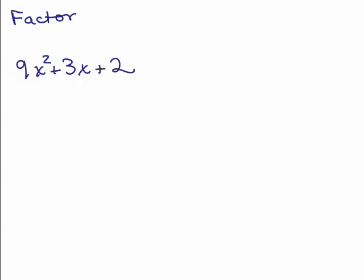Let's try this one, factor 9x squared plus 3x plus 2. So if we do the product and sum idea again, remember the product is the 9 times the 2. So the product is 18, and the sum has to be 3, and again they're both positive.